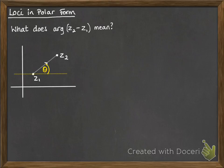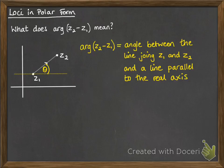Well, it would be this angle here, the angle that it makes with the horizontal, or the real axis. So the argument of z2 minus z1 is the angle between the line that joins them and a line that's parallel to the real axis.